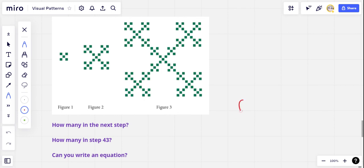Your challenge is to tell the number of squares in figure four. That's a big challenge, but if you can do that, can you tell the number of squares in figure 43? And could you write an equation that you could use to predict the number of squares in any figure at all?